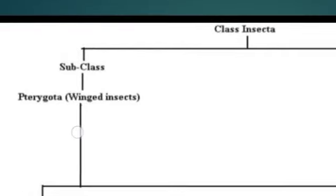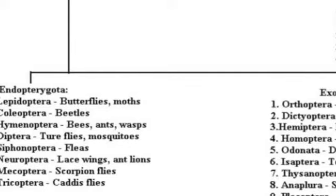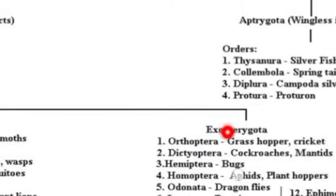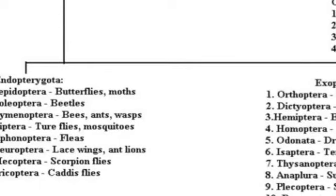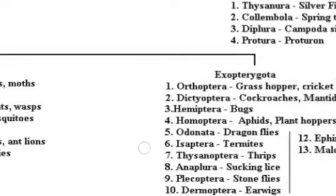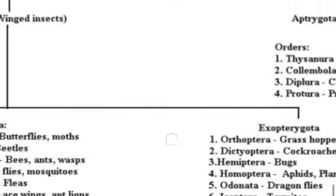In subclass Pterygota, there are two divisions. The subclass Pterygota is divided into Endopterygota and Exopterygota. These are the insects which have wings, so on the basis of development of their wings they are named. Endopterygota means their wings are developed inside a certain cavity, and Exopterygota means the development of wings is done outside a certain cavity.